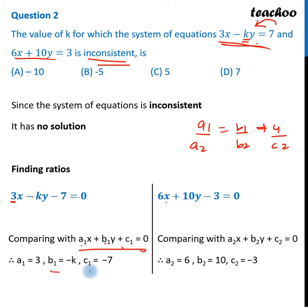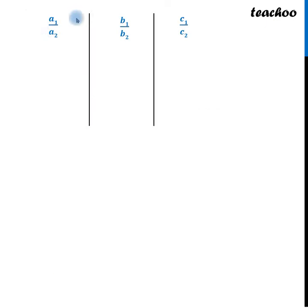Now we have these values, these ratios. So a1 by a2 will be 3 by 6, or 1 by 2. b1 by b2 is minus k by 10. And this will be c1 by c2, which is 7 by 3.